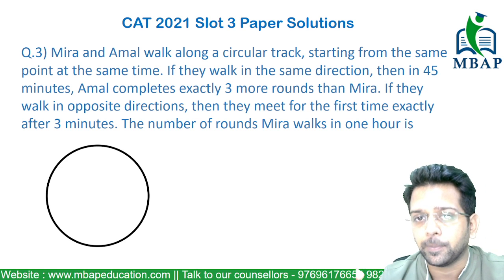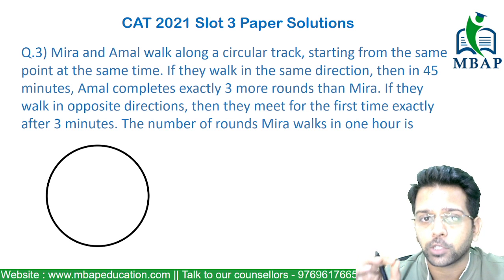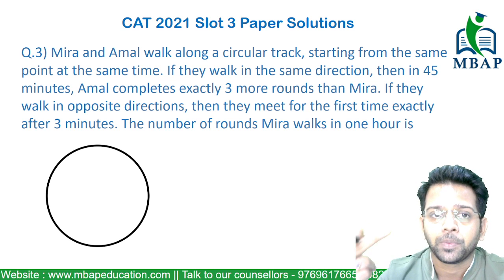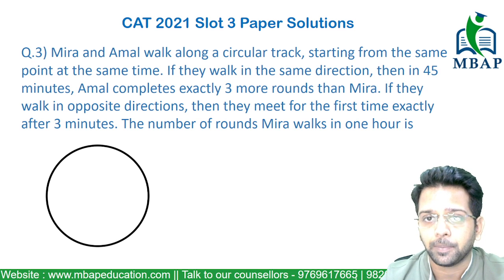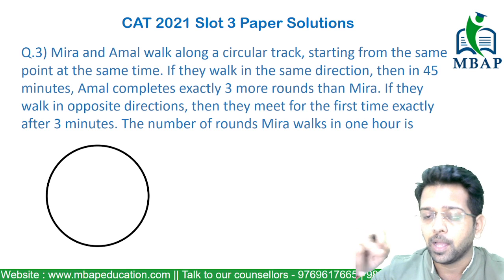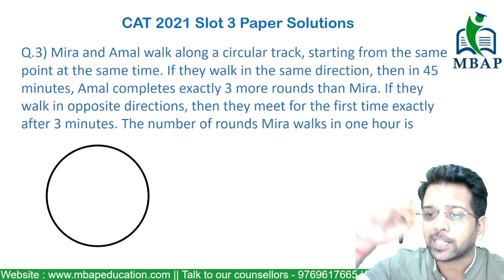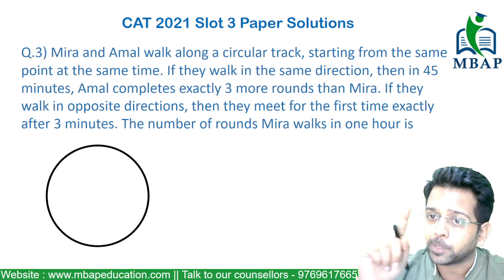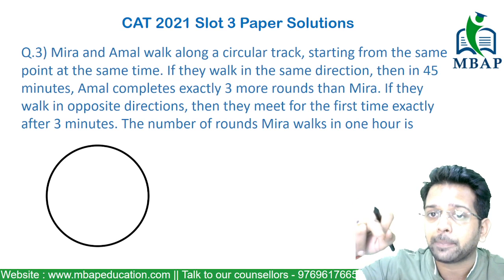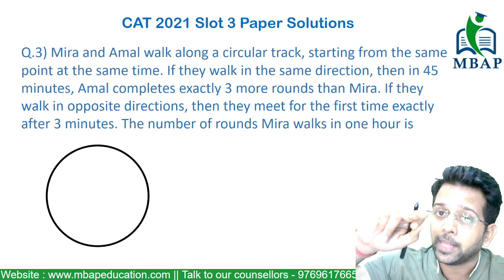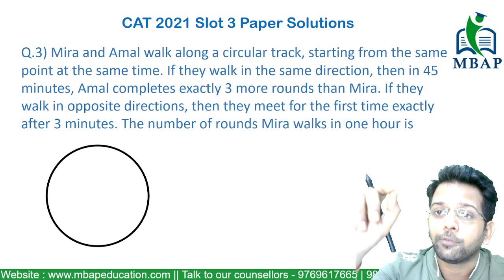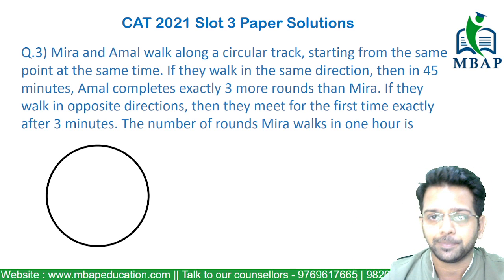The opposite-direction case is clear — they meet for the first time after 3 minutes. The same-direction case is slightly more confusing. In 45 minutes, Amal completes 3 more rounds than Meera. When two people move in the same direction, whenever the difference in laps covered is 1, they meet for the first time. So if the lap difference is 3, they are meeting for the third time. Therefore, in 45 minutes they meet for the third time, which means in 15 minutes they meet for the first time.